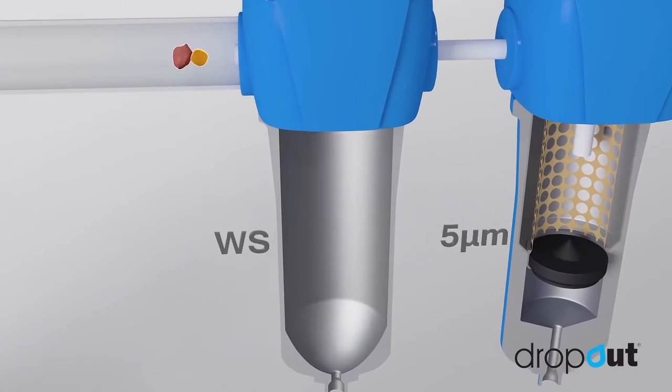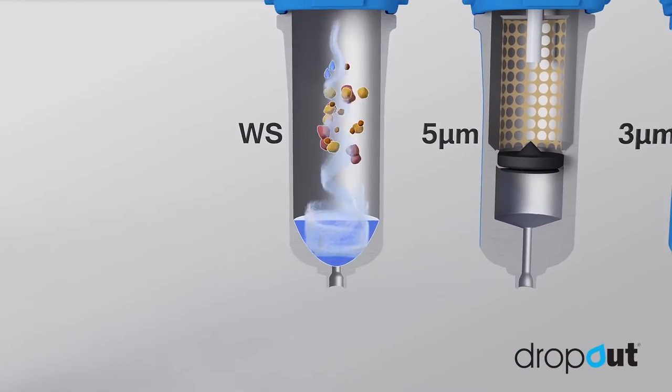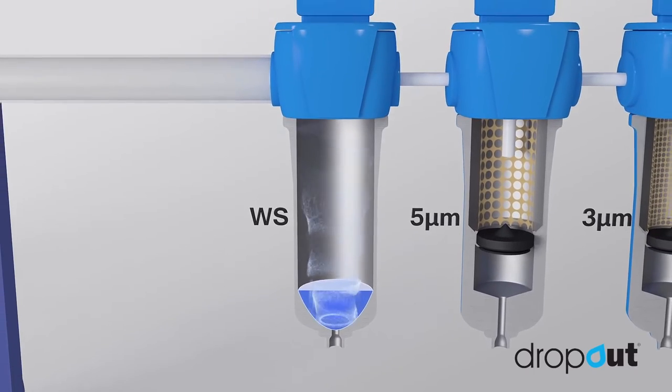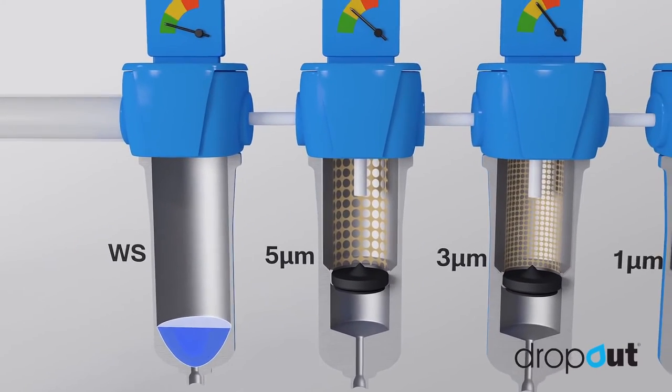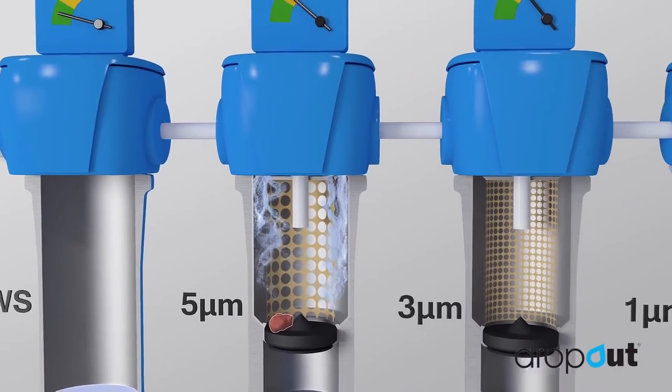In traditional filters, this process is actioned by passing air through a number of filter elements, getting progressively finer. The filter traps these droplets and, whilst descending down the element, they meet with other droplets and coalesce or merge together.